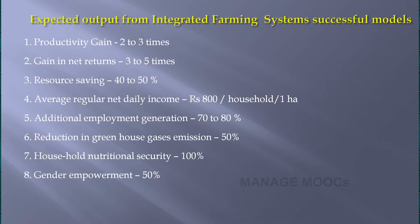These are the two models recommended by ICAR institutions for the north east hill zone. Now we will see the expected outcome or economics of this integrated farming system. It has been seen that the productivity gain will be 2 to 3 times in integrated farming system.